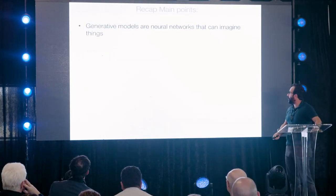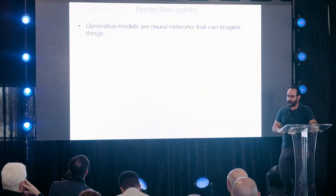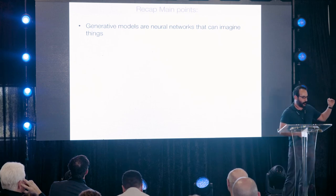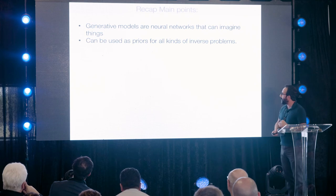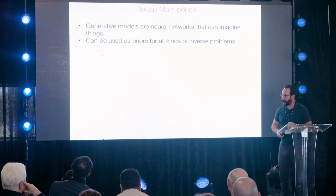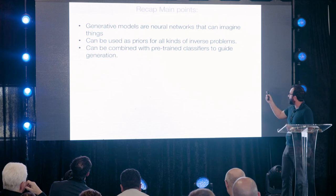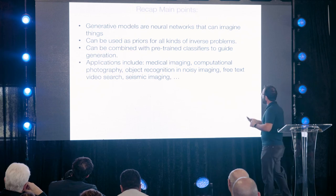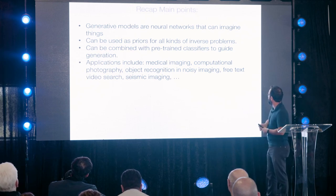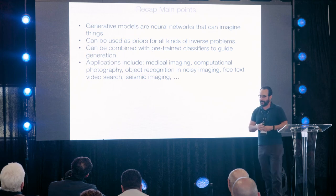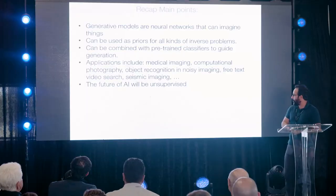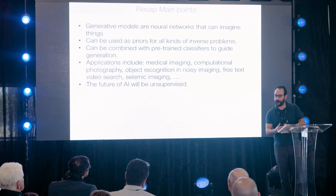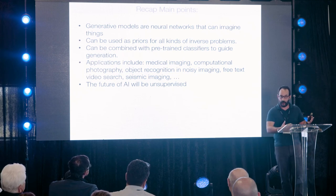To wrap up: generative models are neural networks that can imagine things. Beyond making fake LinkedIn profiles, they can be used as priors for all kinds of inverse problems, and combined with pre-trained classifiers to guide generation, like our frog example. Applications include medical imaging, computational photography, object recognition, noisy imaging, free text video search, and seismic imaging. The future of AI will be unsupervised in general, because everybody has a lot of data but not many have a lot of labeled data. Thank you.